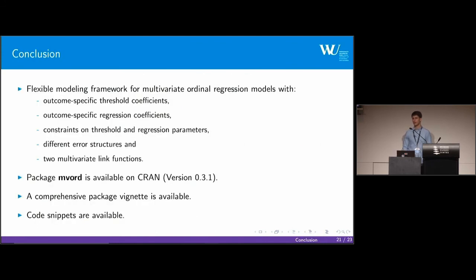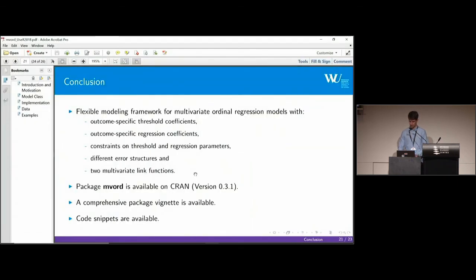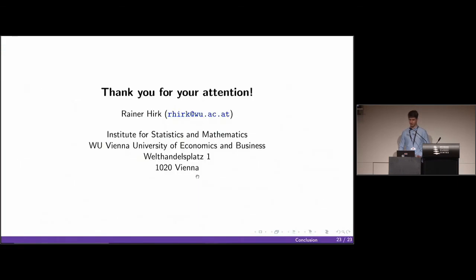Let me conclude. The package mvord is a flexible modeling framework for multivariate ordinal regression models. We support outcome-specific thresholds as well as regression coefficients. Constraints on the threshold and the regression coefficients can be performed. We support different error structures. We support two different link functions, and if the user desires different link functions, she can implement additional link functions. The package is available on CRAN. Comprehensive package vignette and code snippets are available as well. Here are some references. Thank you for your attention.